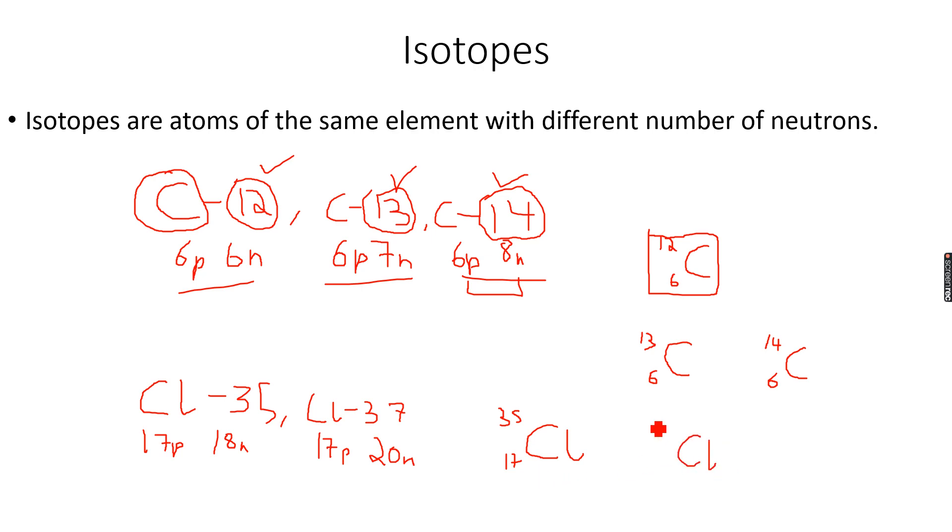And for the Cl 37 isotope, we write 37 on top because that's the nucleon number and we write 17 on the bottom because that's the proton number. We don't write P, we just write 17.